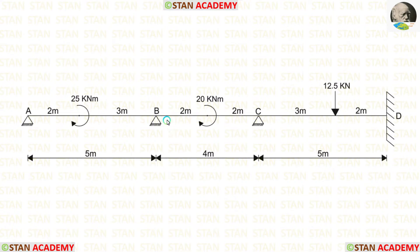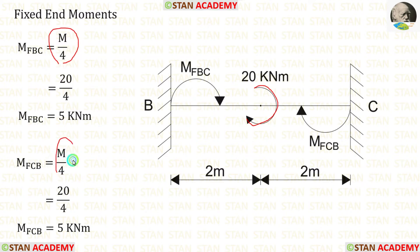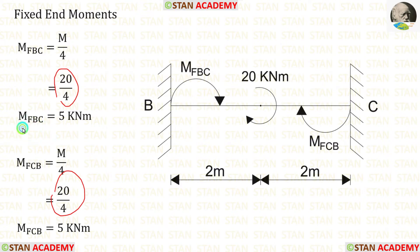Now let us find the fixed end moments in span BC. There is a clockwise concentrated moment acting at the center. The formulas for the fixed end moments are M/4 and M/4. After applying the value of M, we get MBC and MCB.